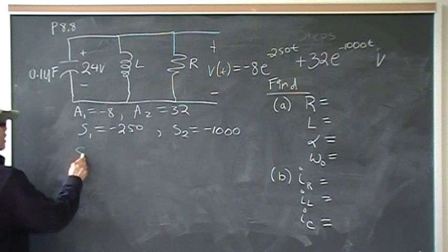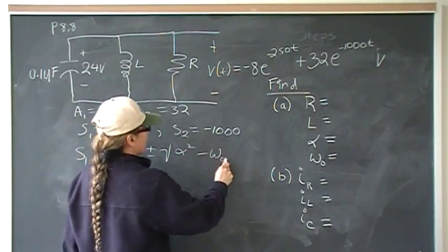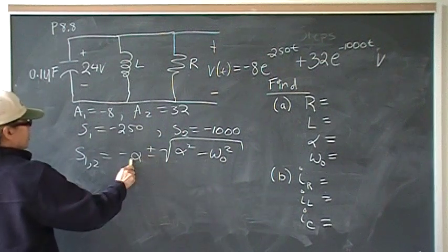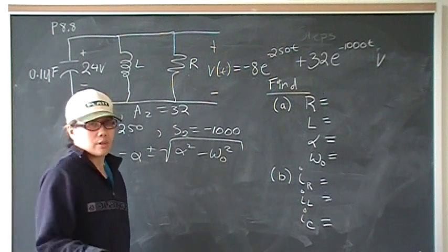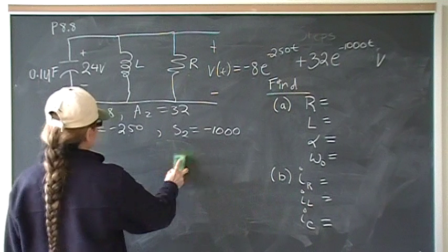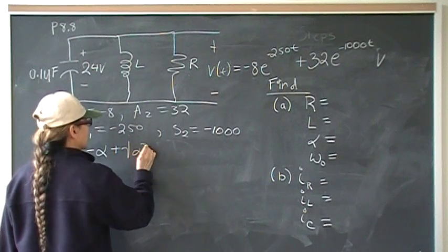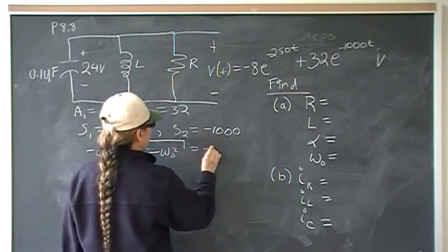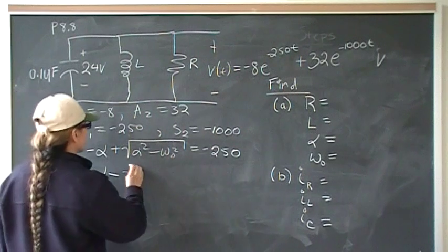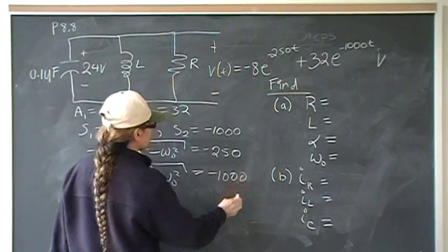This is very useful information because we know that S1,2 = -α ± √(α² - ω₀²). We have two unknowns — alpha and omega-naught — and two pieces of information. With two equations and two unknowns, we can solve for both. Equation 1: -α + √(α² - ω₀²) = -250. Equation 2: -α - √(α² - ω₀²) = -1,000.